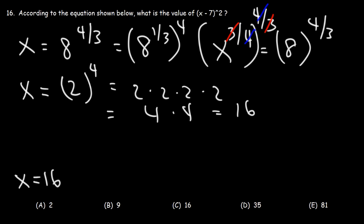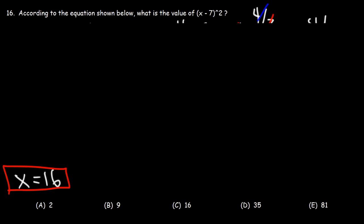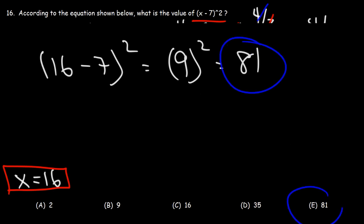So now we have the value of x. Our goal is to calculate the value of x minus 7 squared. So let's plug x into that expression — it's going to be 16 minus 7 squared. 16 minus 7 is 9, and 9 squared is 81. So this is our answer, answer choice E.